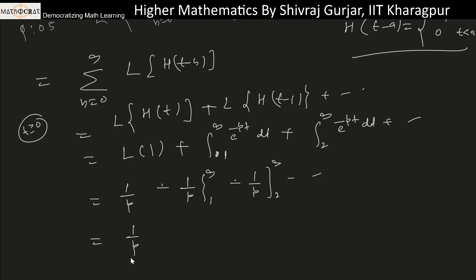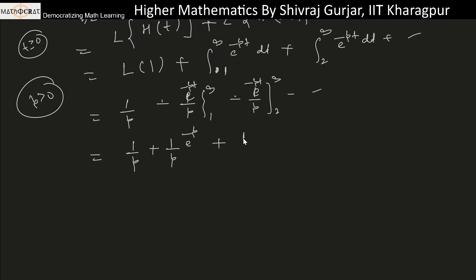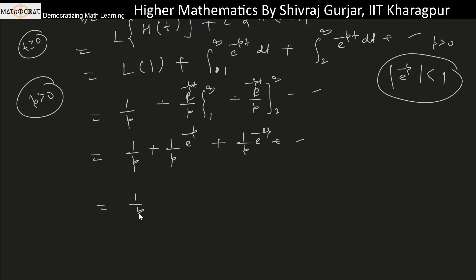So the total sum is 1/p + (1/p)·e^(-p) + (1/p)·e^(-2p) + ... This is an infinite geometric series with first term 1/p and common ratio e^(-p), which is less than 1 since p is positive. Taking 1/p out, the sum equals (1/p) · 1/(1 - e^(-p)). By the GP formula with sum = 1/(1-r), the answer is 1/[p(1 - e^(-p))].